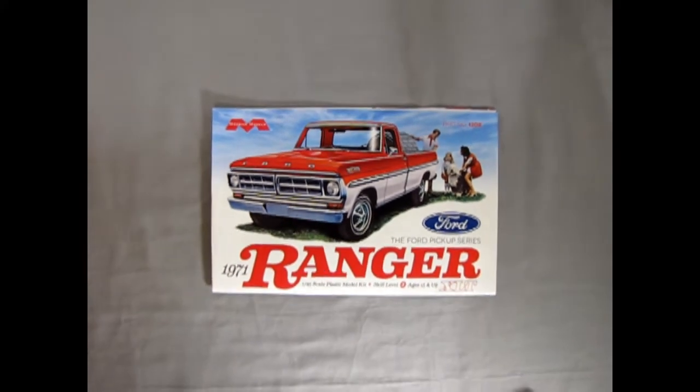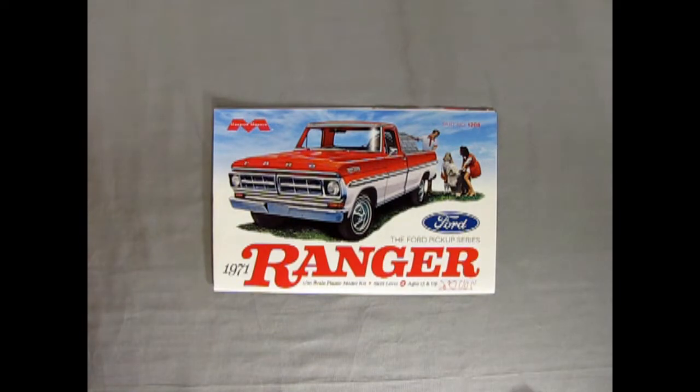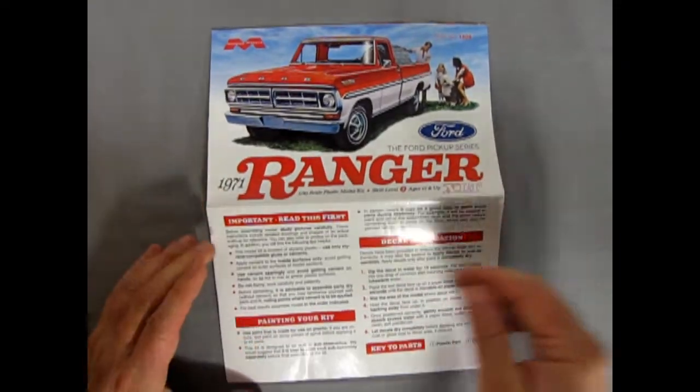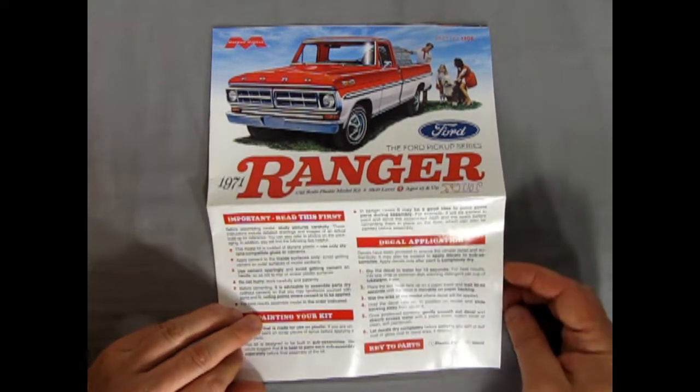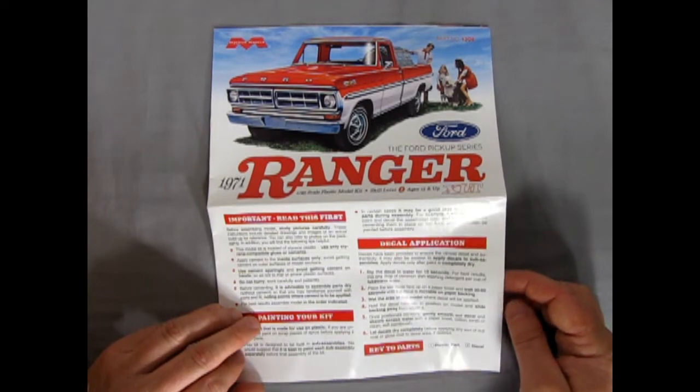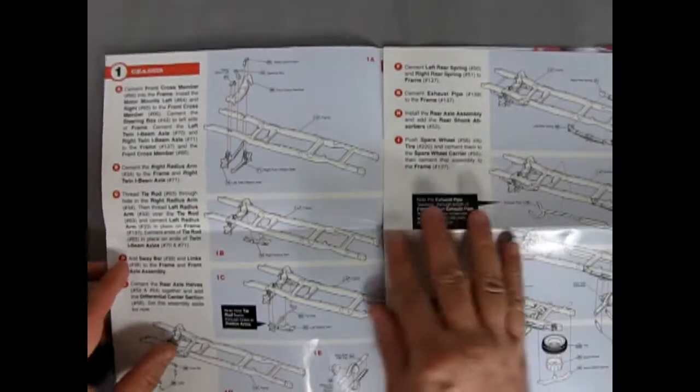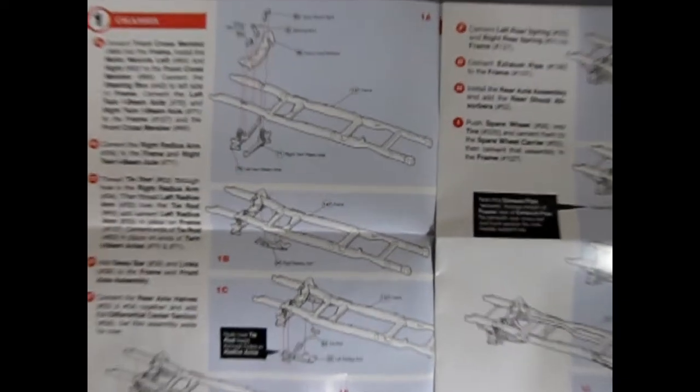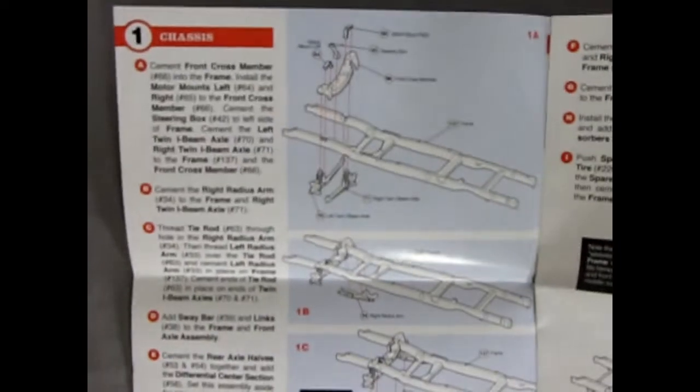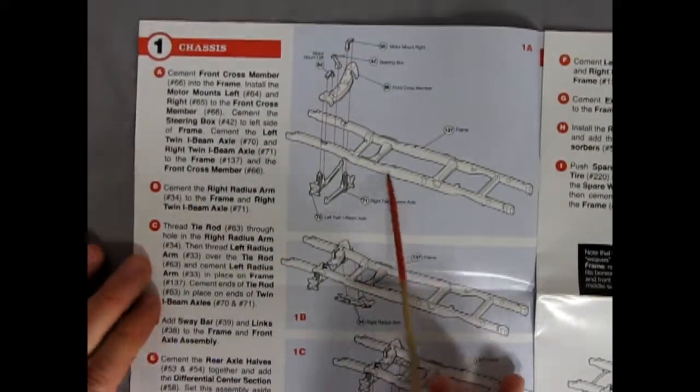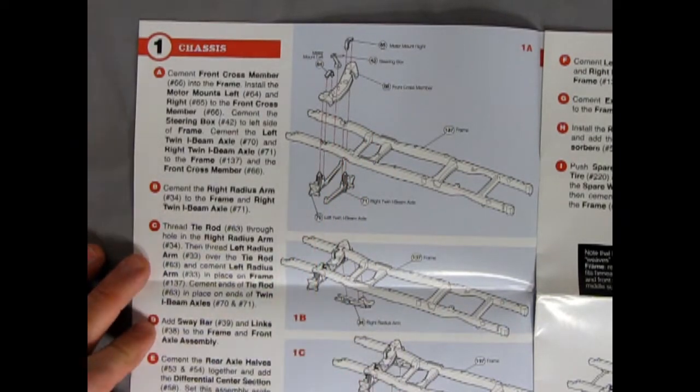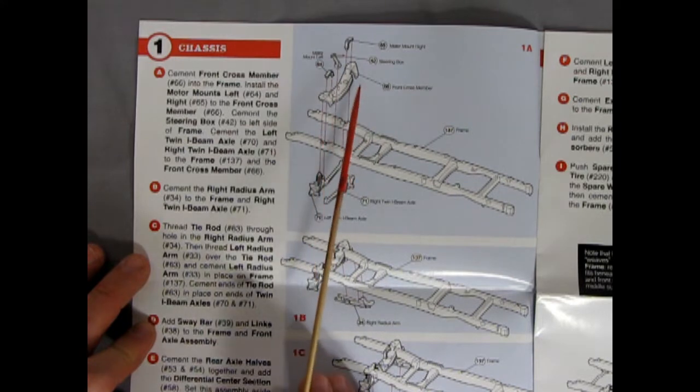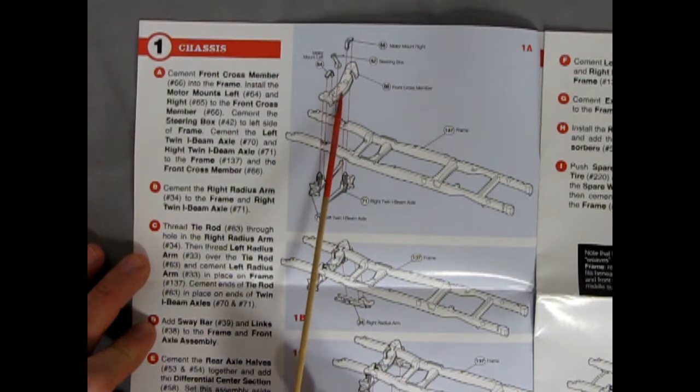Suddenly it's 1971 again as we get to review these amazing instructions. Here's all our important read this first stuff: painting your kits, the keys to the parts, and our decal application guide. This kit really reminds me of the AMT 1953 Ford pickup truck. It's laid out exactly the same and that's what I love about this. We've got our front cross member here, our motor mounts separate, our steering box, and there's our left and right twin I-beams going in.